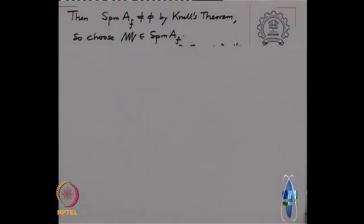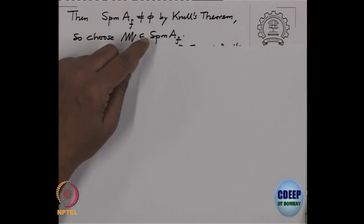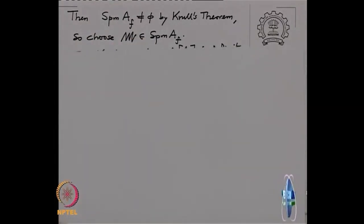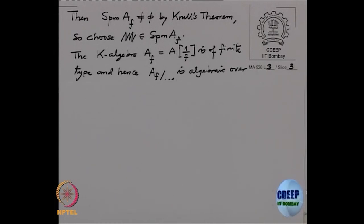Because the ring A localized at F is a non-zero ring, by Krull's theorem there is definitely a maximal ideal — that is, there exists a gothic M in SPM of A localized at F. I denote maximal ideals by SPM rather than max A, to avoid confusion with the maximum. Now, the K-algebra A localized at F is actually a finite-type K-algebra, because it is generated by the generators of A (finitely many) along with 1 over F.